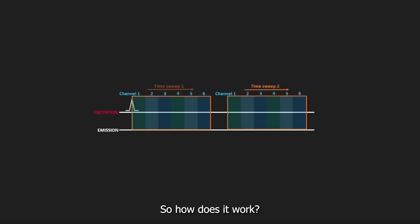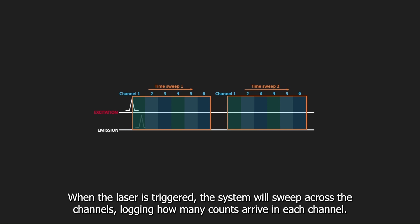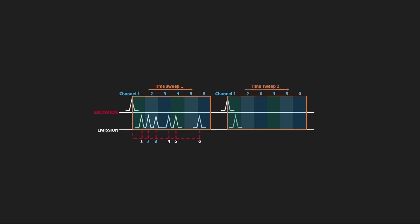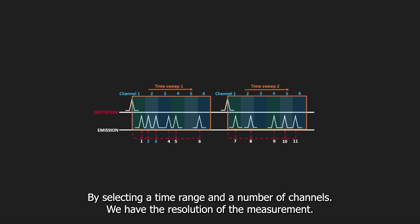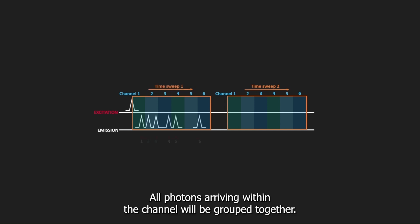So how does it work? When the laser is triggered, the system will sweep across the channels, logging how many counts arrive in each channel. The resolution is set before the experiment is run. By selecting a time range and a number of channels, we have the resolution of the measurement.